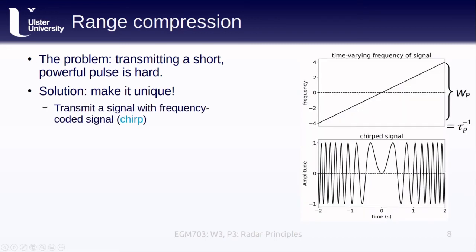Rather than transmitting a pulse that's just a single peak, we instead transmit a signal with a frequency that changes over time like this, and we call this a chirp. So the change in frequency from the start of the pulse or the start of the chirp to the end of the chirp is the inverse of the bandwidth, or tau P, of the signal.